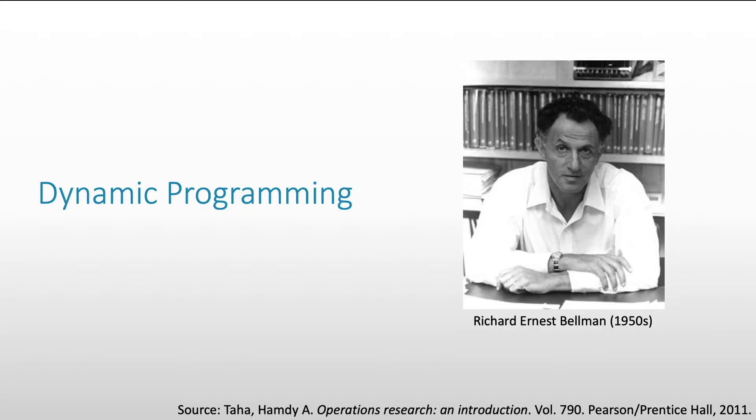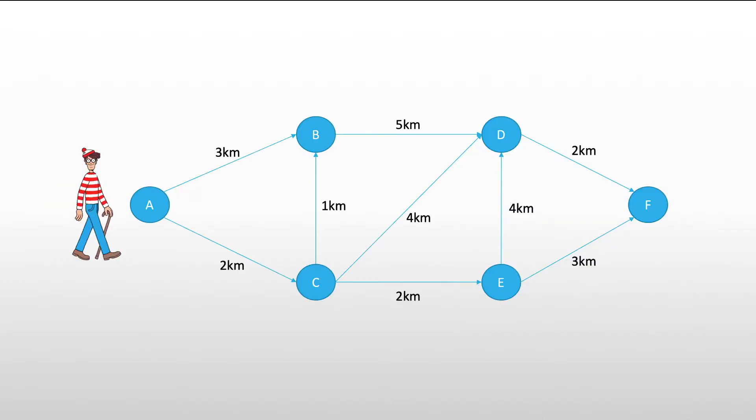But in order to understand all of it, let's have a little example. For example, we have Waldo, and Waldo wants to go from point A to point F, but he has to pass through four different points. This is a very common example, which is called the shortest path problem. And usually, we solve this with one of the most common approaches, which is called the greedy algorithm or the greedy approach.